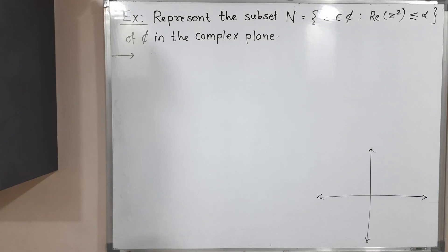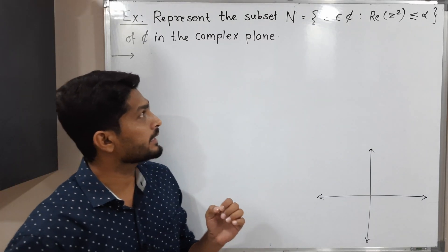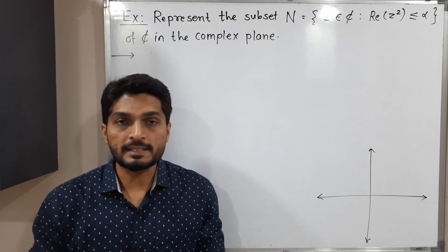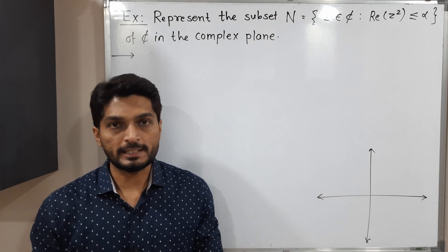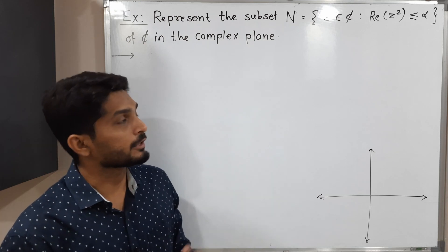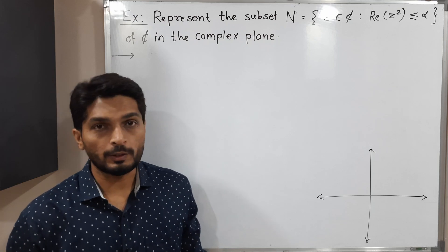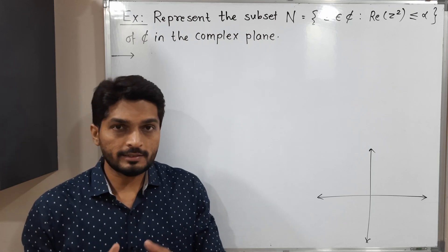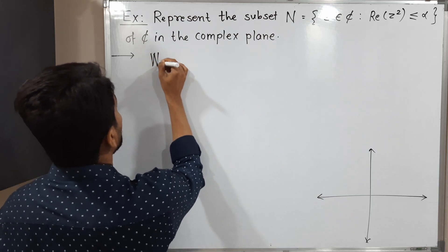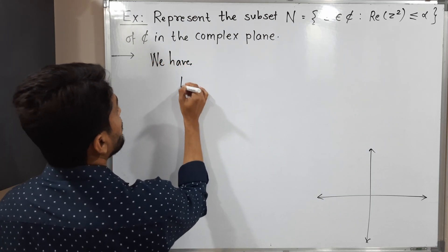In this video we are going to discuss this example. We have a set N which is a subset of the complex numbers, and we have to represent it in the complex plane. N is the set of complex numbers which satisfy the condition that the real part of z squared is less than or equal to alpha. Let us start to discuss that condition.